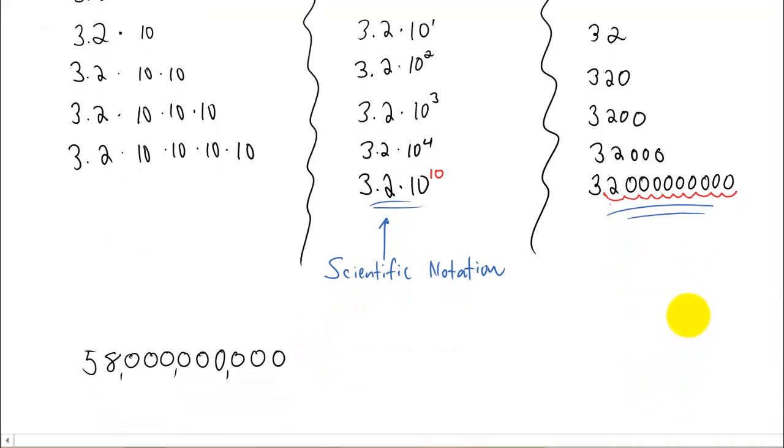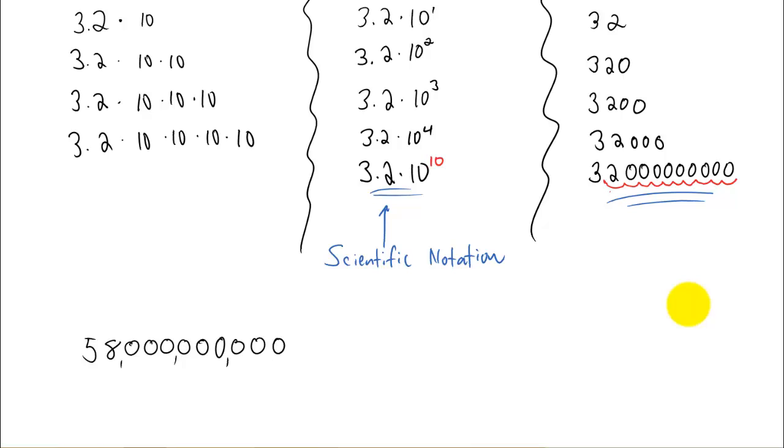Let's do a quick problem. What if we had this giant number here? How could we write that number in scientific notation? Well, the way to always write a number in scientific notation is to have one whole number and a decimal after that first whole number. And then after that decimal,